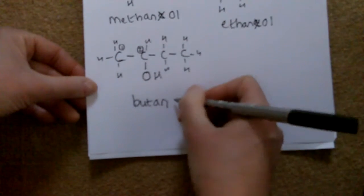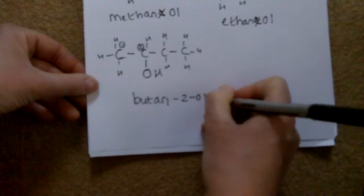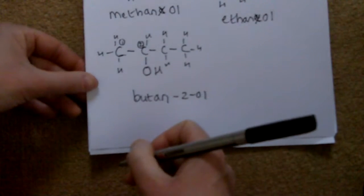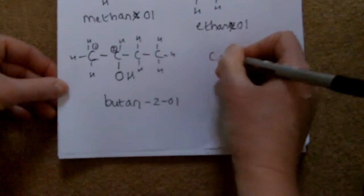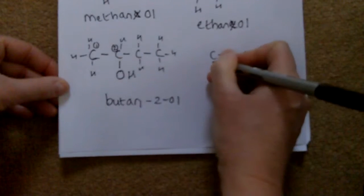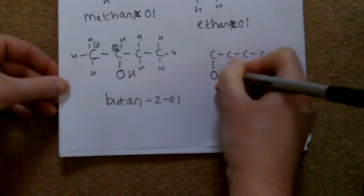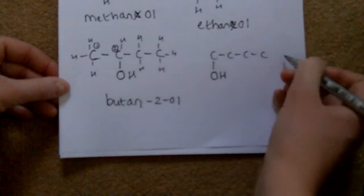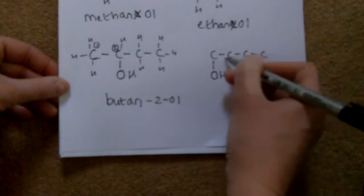Giving the OH the lowest number, it's on carbon 2, so this is butan-2-ol. There are hydrogens all the way around the other carbons.